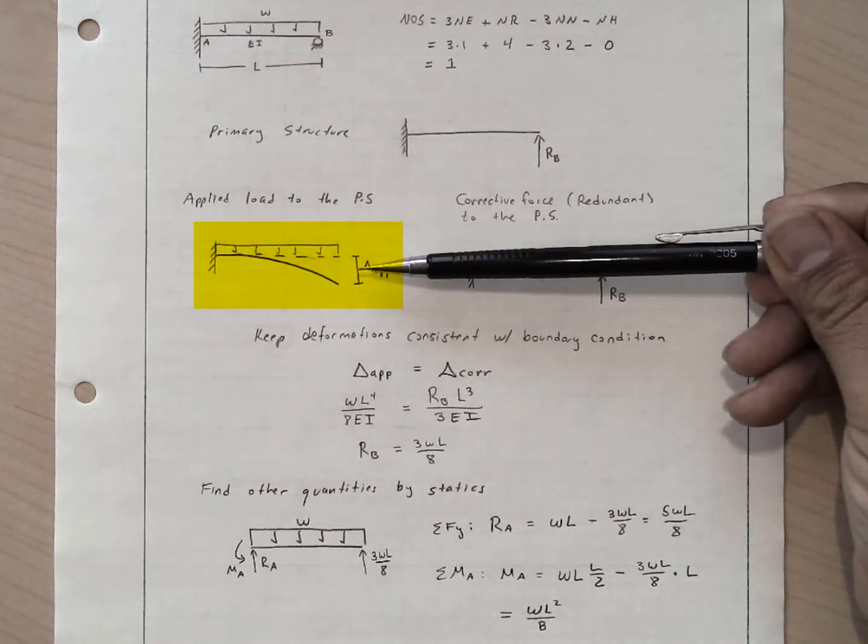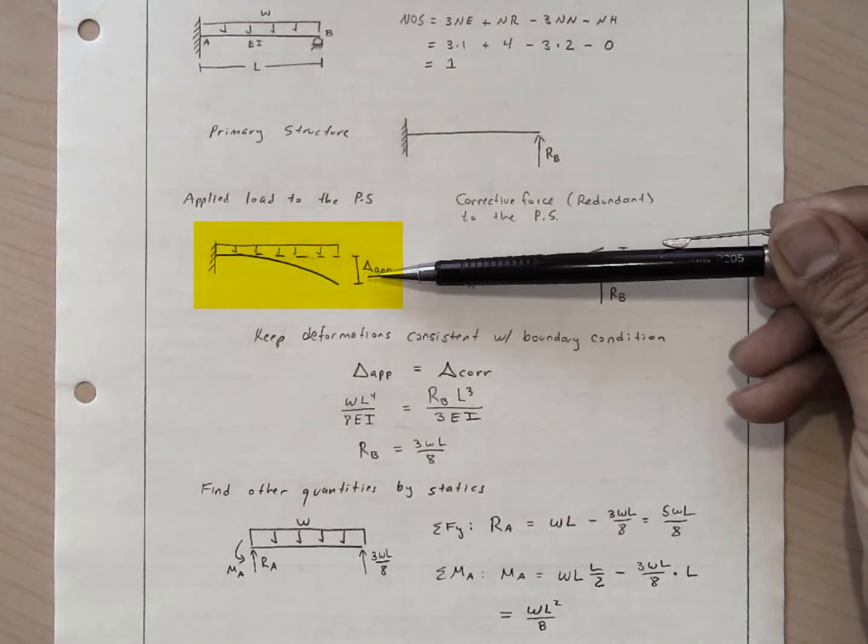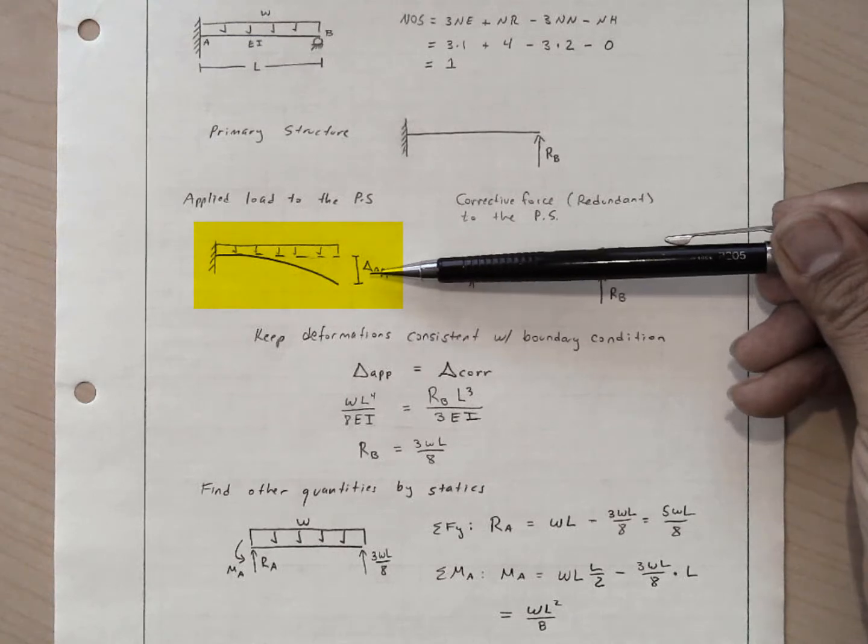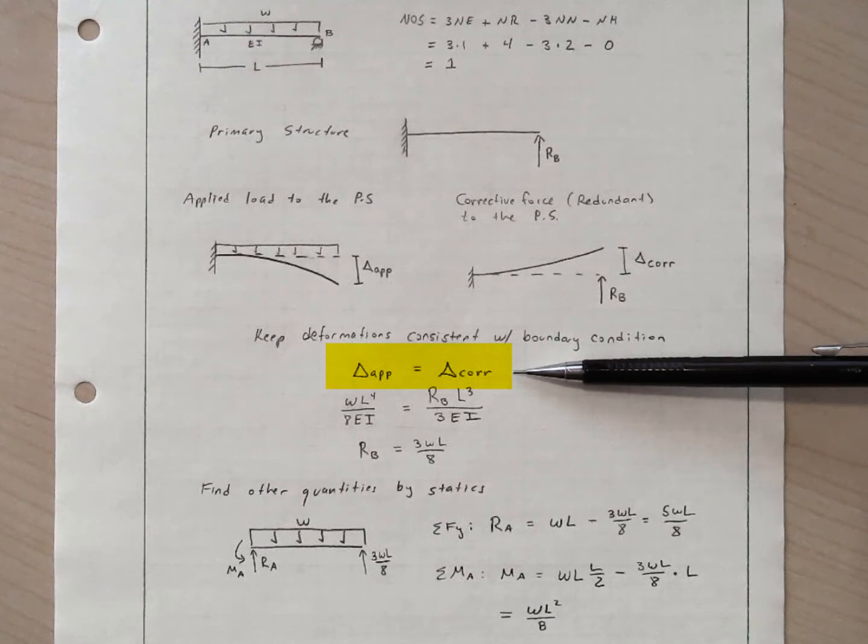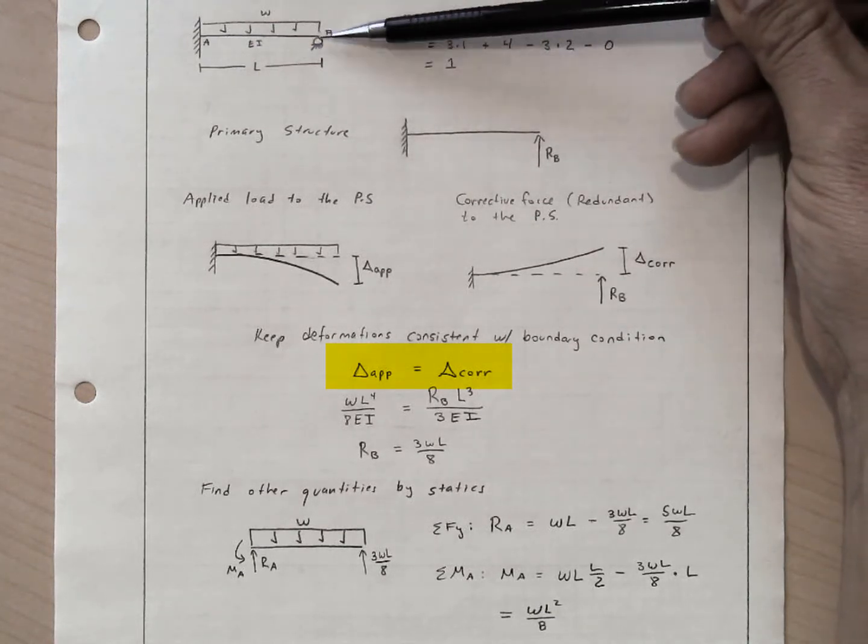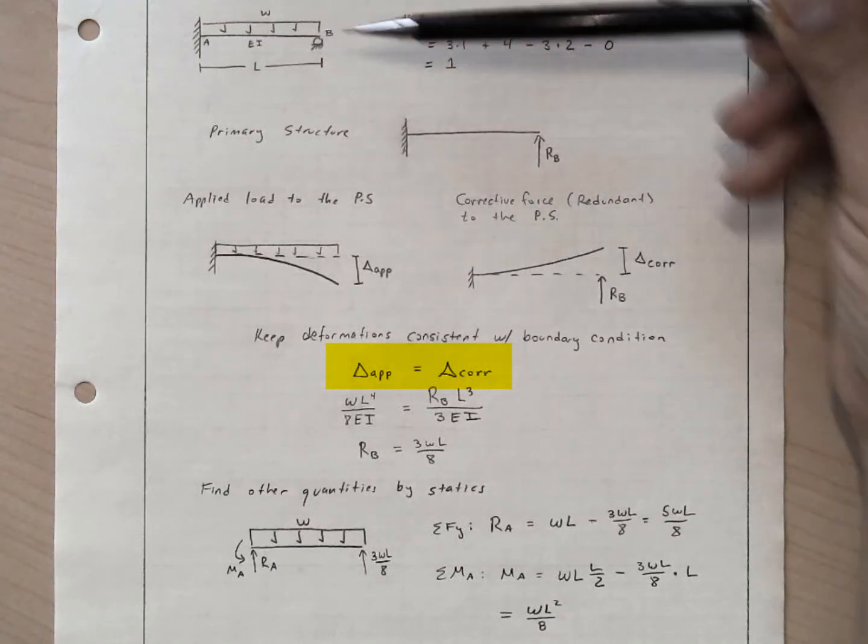We find the deflection wherever we've removed a support due to the applied load. We find a similar deflection due to the corrective or redundant force. We enforce the condition that those must be the same to enforce the actual boundary condition in the indeterminate structure.